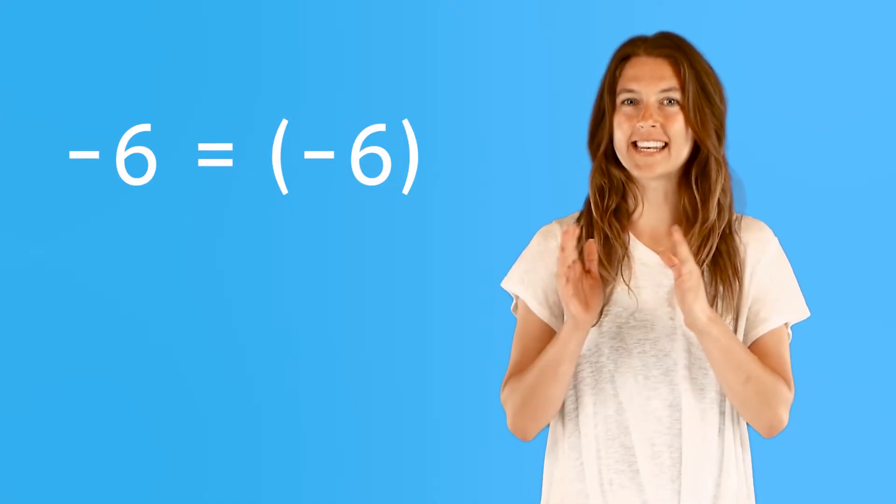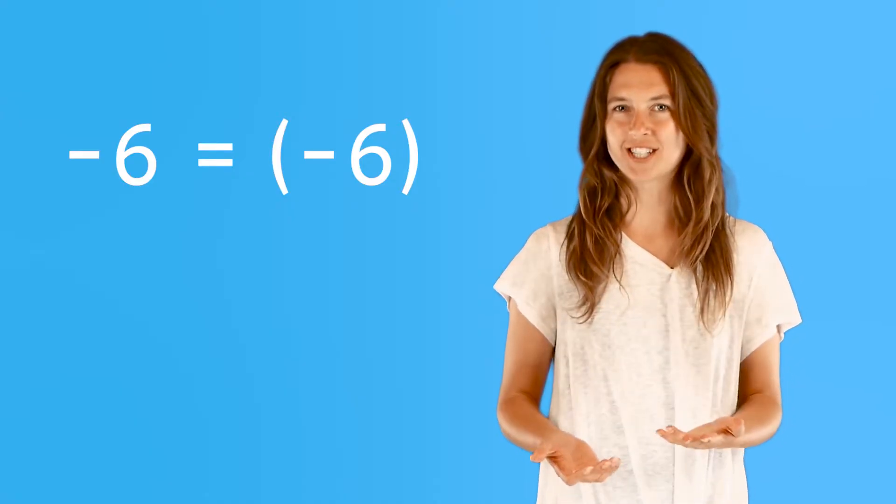When we write negative numbers, we must always use a negative sign to the left of the number like this. When writing negative numbers in math equations, we also use parentheses to make sure we don't confuse a negative number with subtraction.